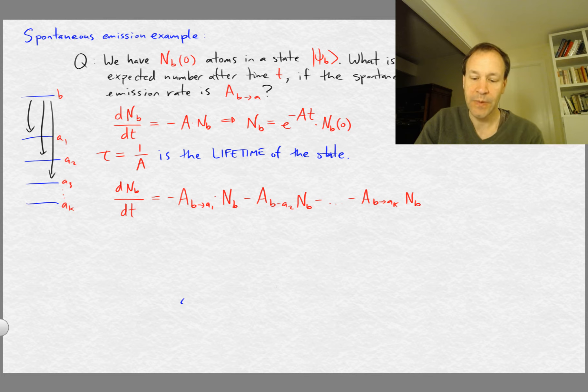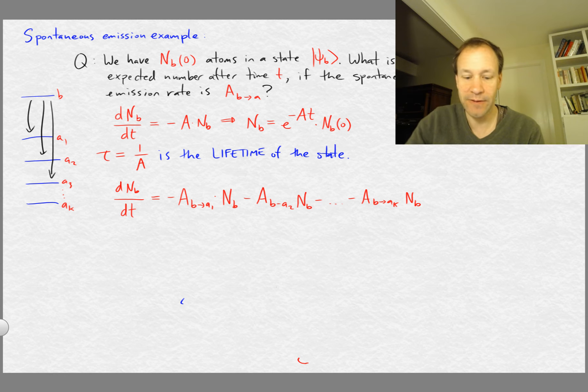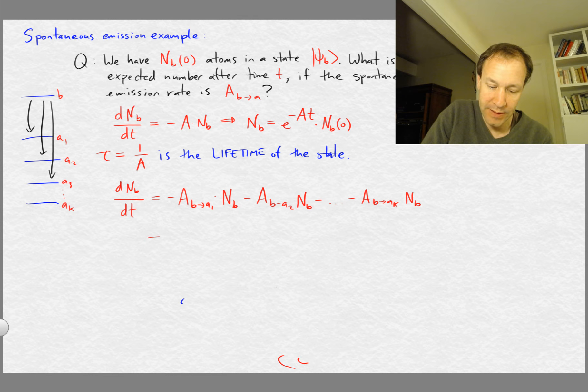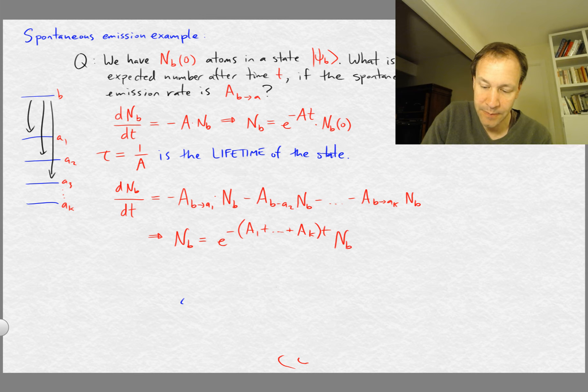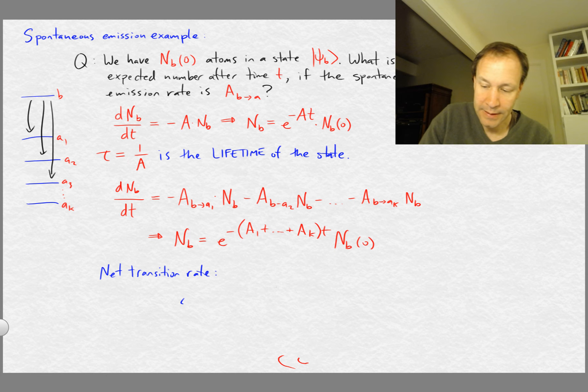And each of the terms is the number of b atoms times some spontaneous transition rate. And so where we had A before, now we just have a sum of A's. And so everything else is the same. And so when we solve the equation, we get n_b is going to be equal to e to the, I'll just call it A_1 all the way up to A_k times t times n_b of 0.